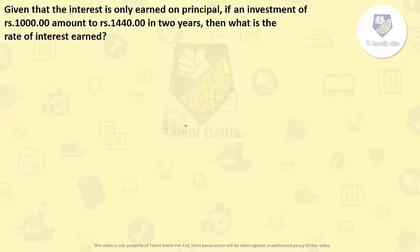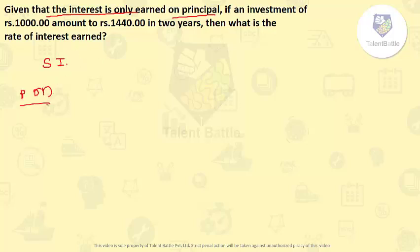Given that the interest is only earned on the principal: if an investment of Rs 1,000 amounts to Rs 1,440 in 2 years, then what is the rate of interest earned? Since interest is only earned on the principal, this is a simple interest example. We use the formula: Simple Interest = PRN upon 100, where P is principal, R is rate, and N is number of years.